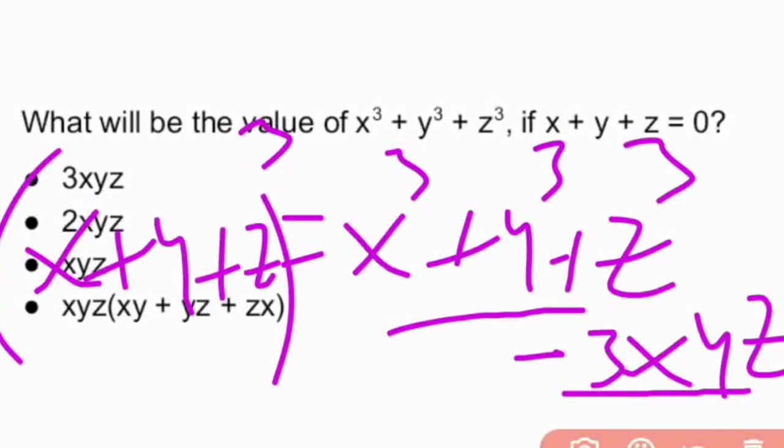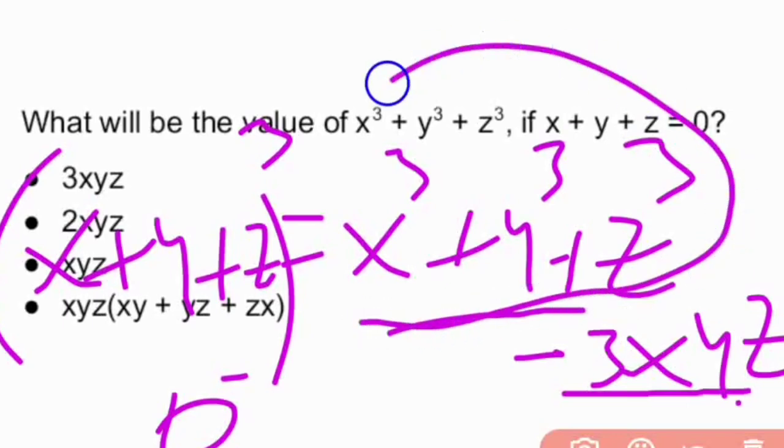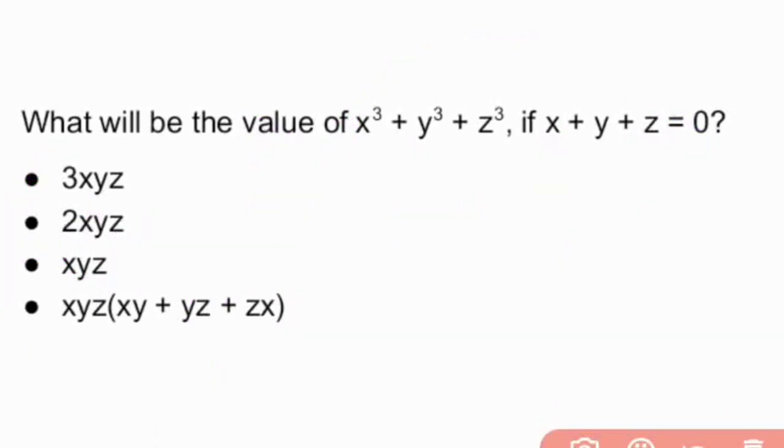So it is clear that x + y + z is 0, so the left side will become 0. The left side part will become 0. So our answer is x³ + y³ + z³ = 3xyz.